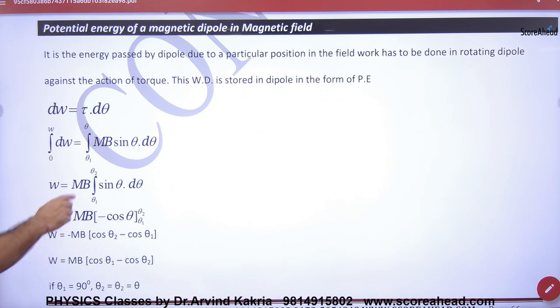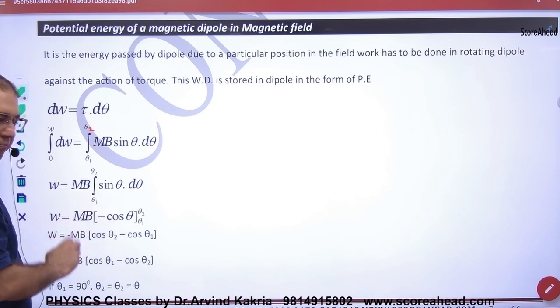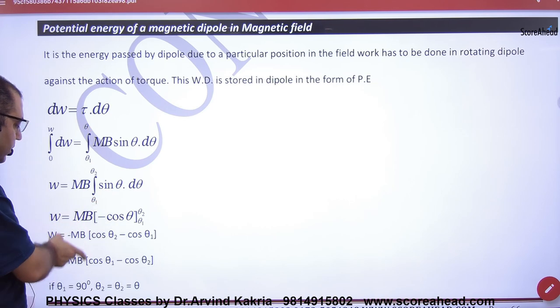So, remember how did you take the dipole? Theta₁ to theta₂. So, mb is common with sinθ integration. Minus cosθ. We will put the limit. So, what will it be?